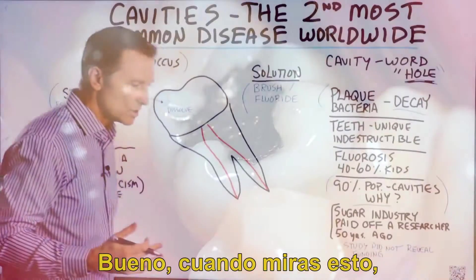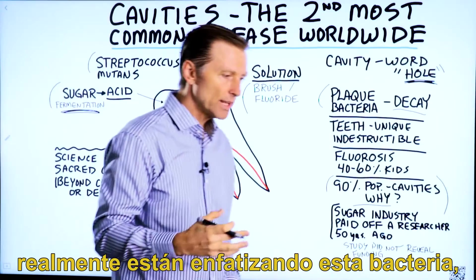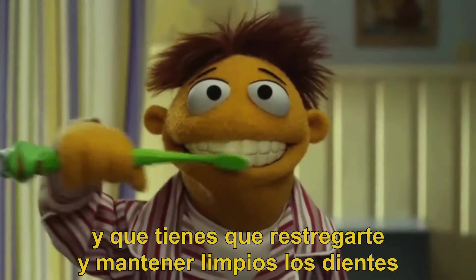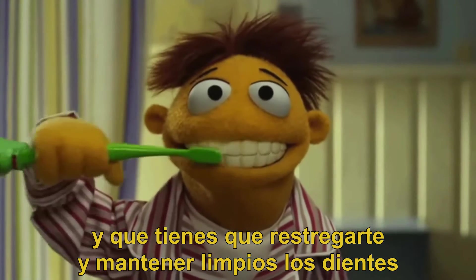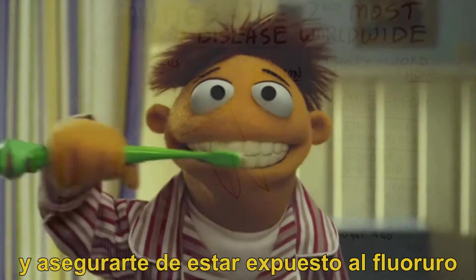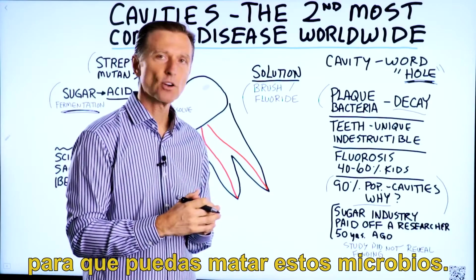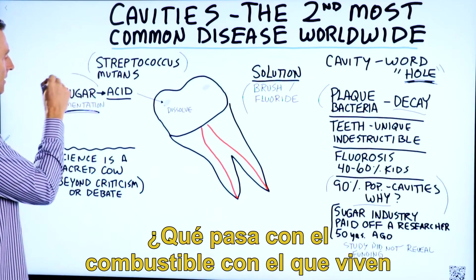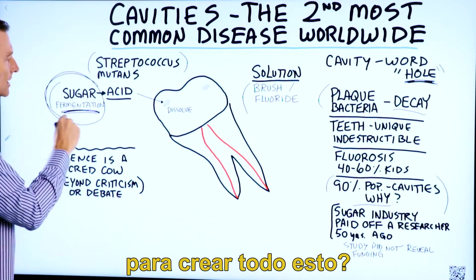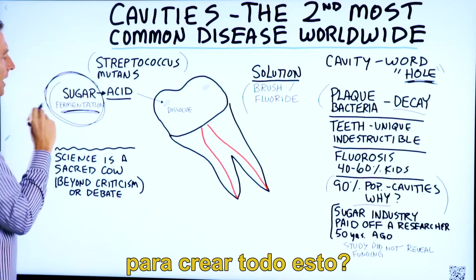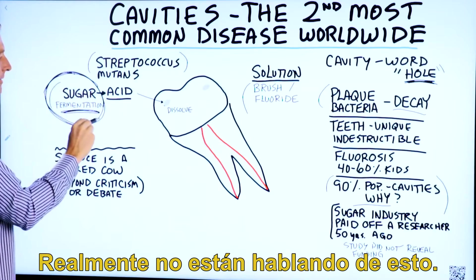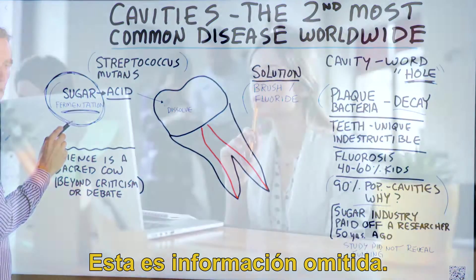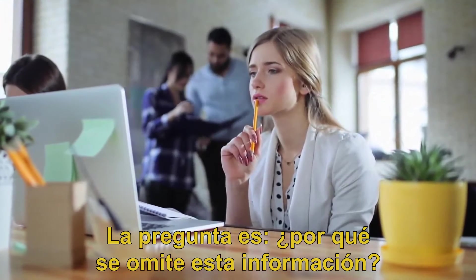Why? When you look this up, they're really emphasizing this bacteria and that you have to scrub and keep your teeth clean and make sure you're exposed to fluoride to kill these microbes. But what about the food? What about the fuel that they live on to create this whole thing? They're really not talking about this. This is omitted information. The question is, why is this information omitted?